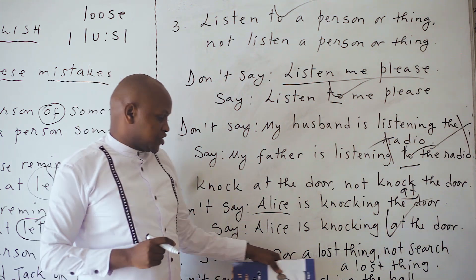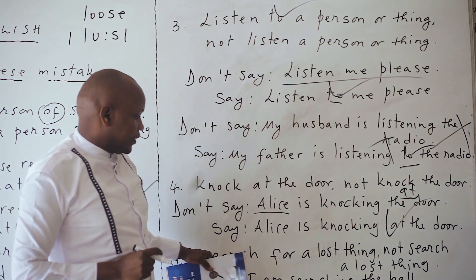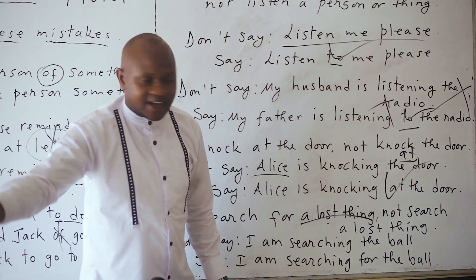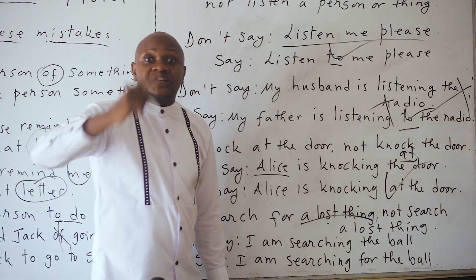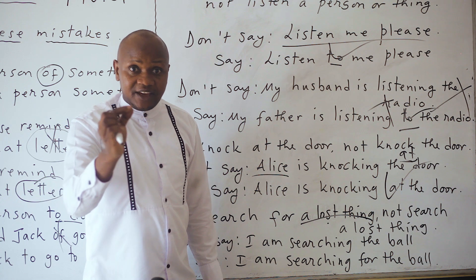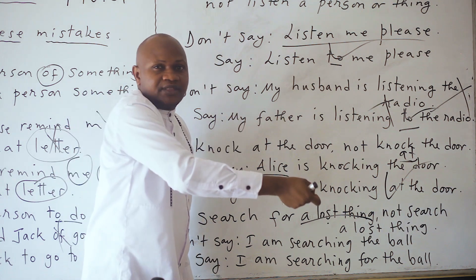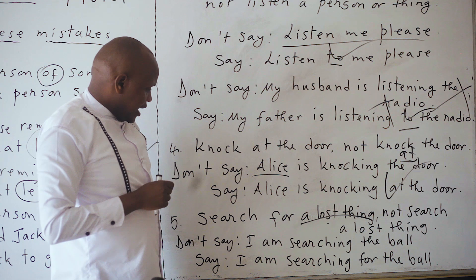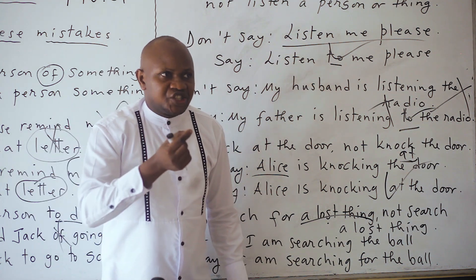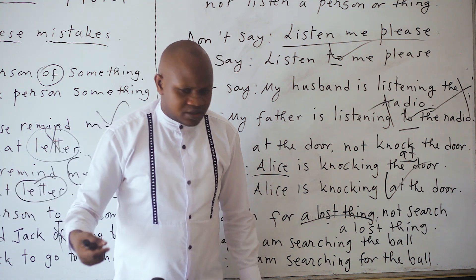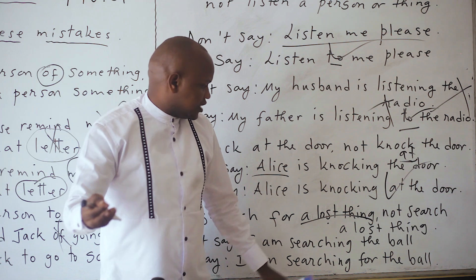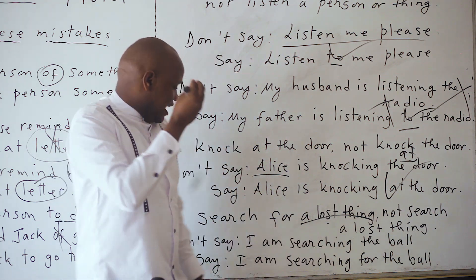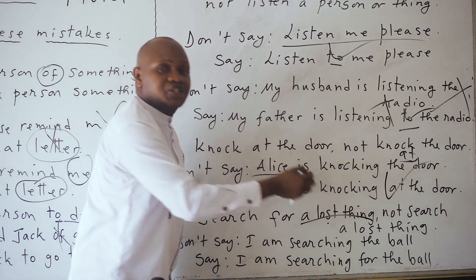We say 'to search for a lost thing,' not 'to search a lost thing.' We search for something; we don't search something. For example, don't say 'I am searching the ball' — that is a mistake. To search for a lost thing, not to search a lost thing.